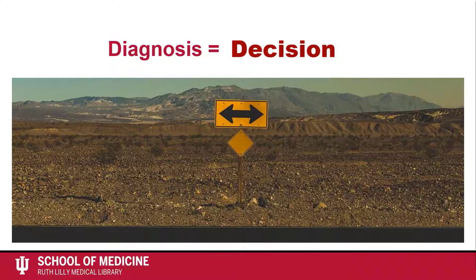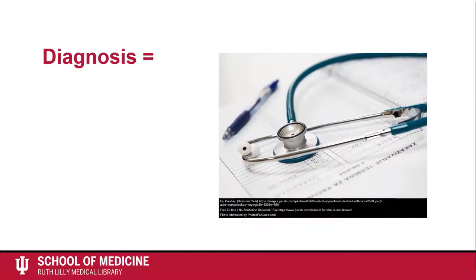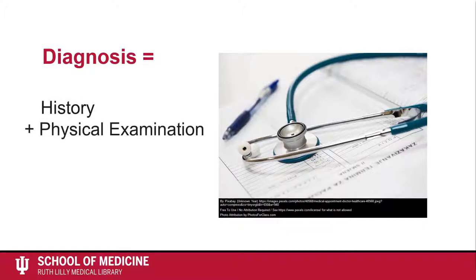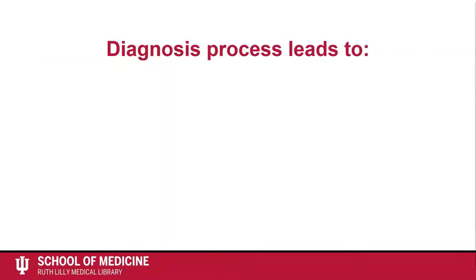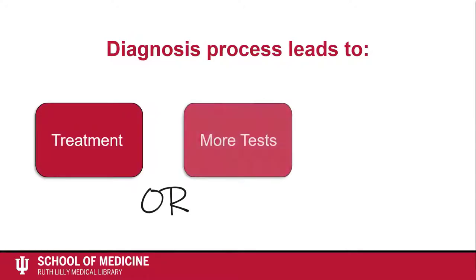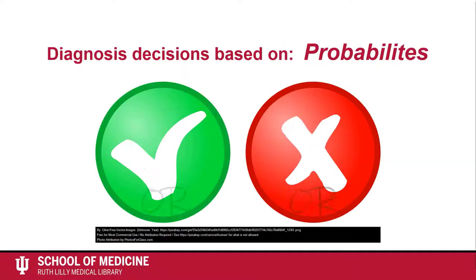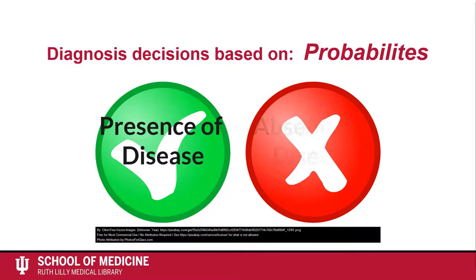Essentially, a diagnosis is a decision you make as a clinician. Diagnosis is the process of using history, physical examination, and investigations to identify the disease responsible for the patient's complaint. This process ends up with a decision that varies between starting treatment, asking for more investigations, or ignoring the condition completely. These decisions are taken based on the probabilities of the presence or absence of various diseases and disorders, which are usually calculated at a subconscious level.